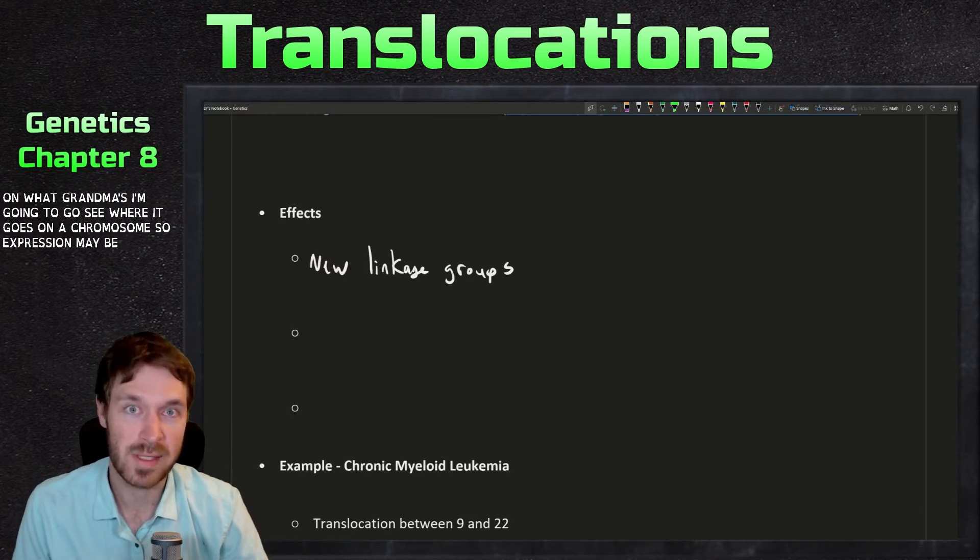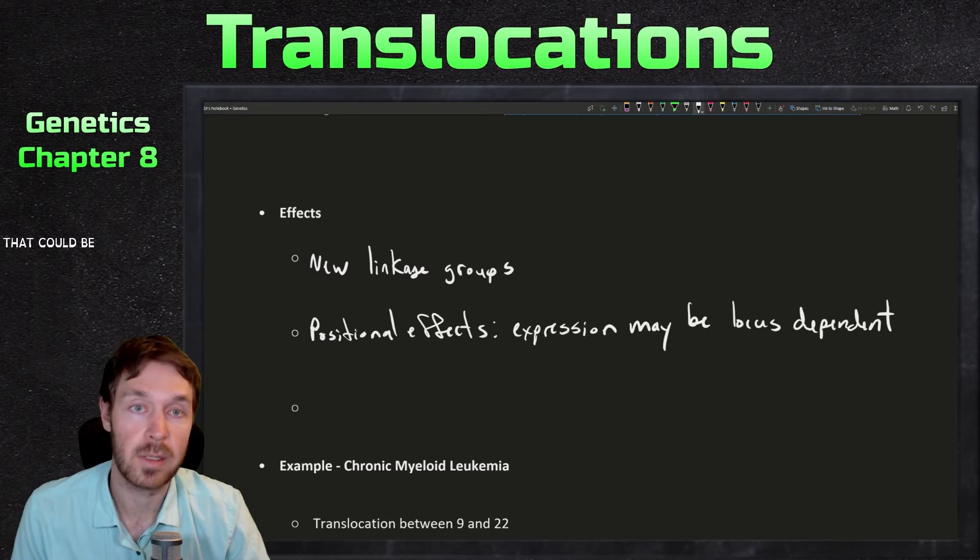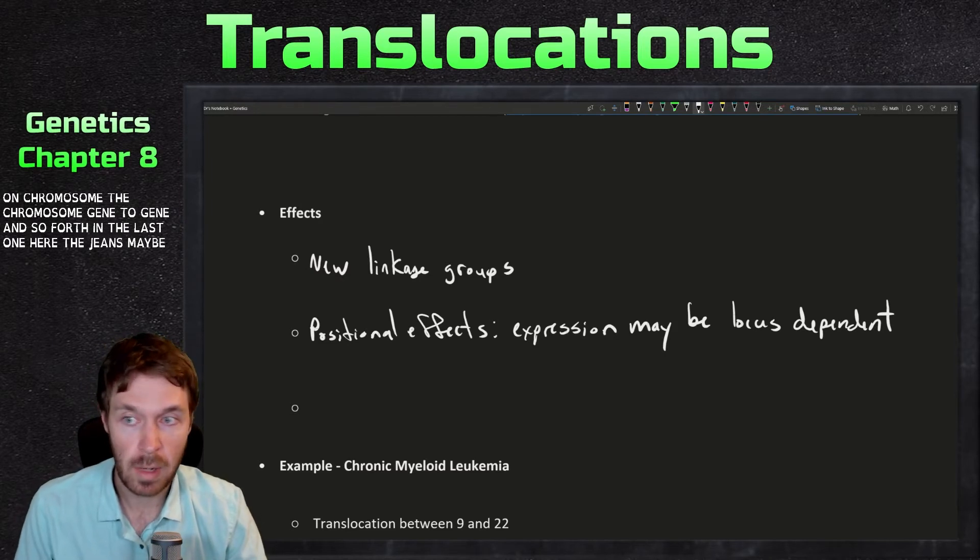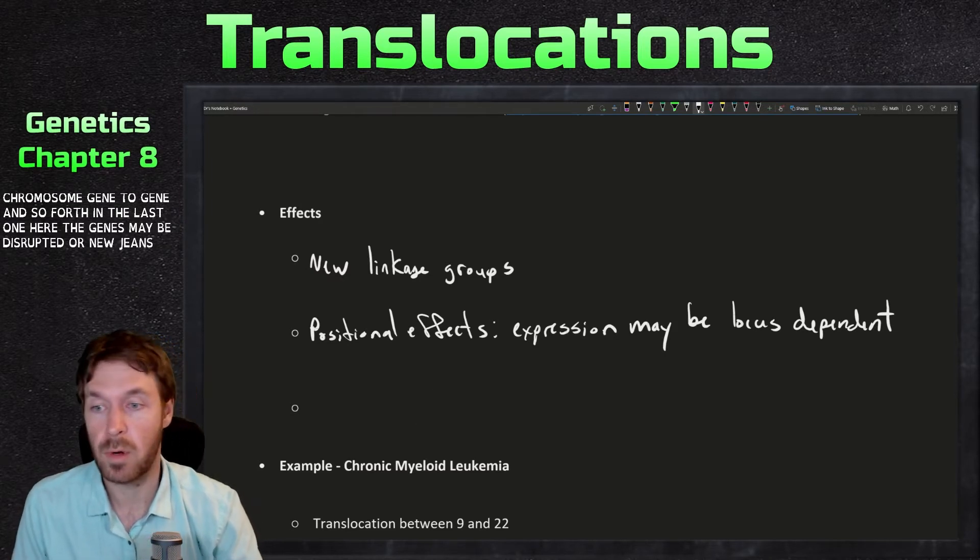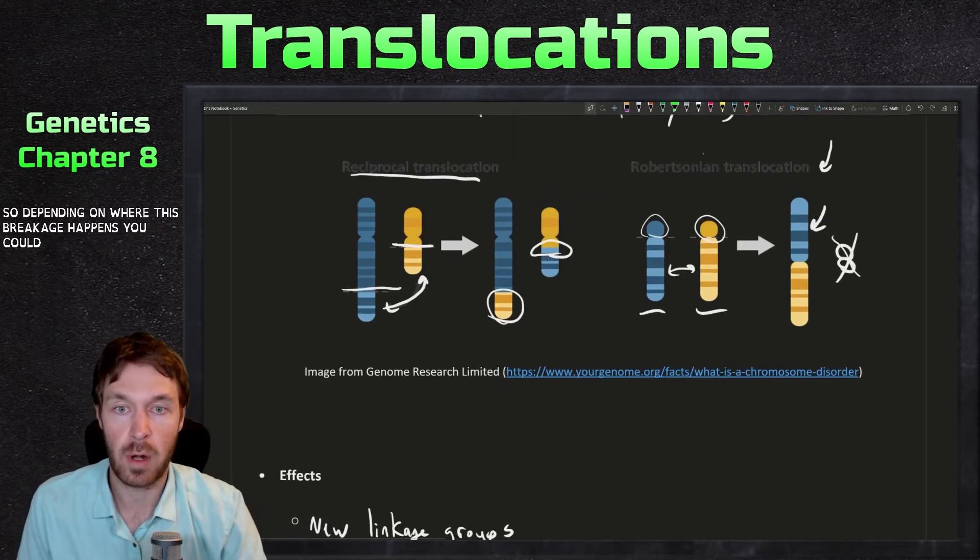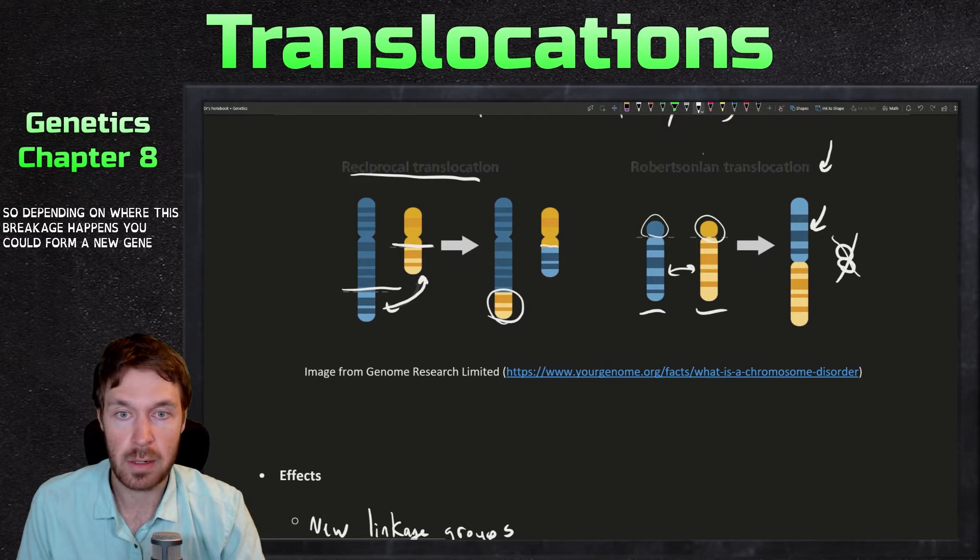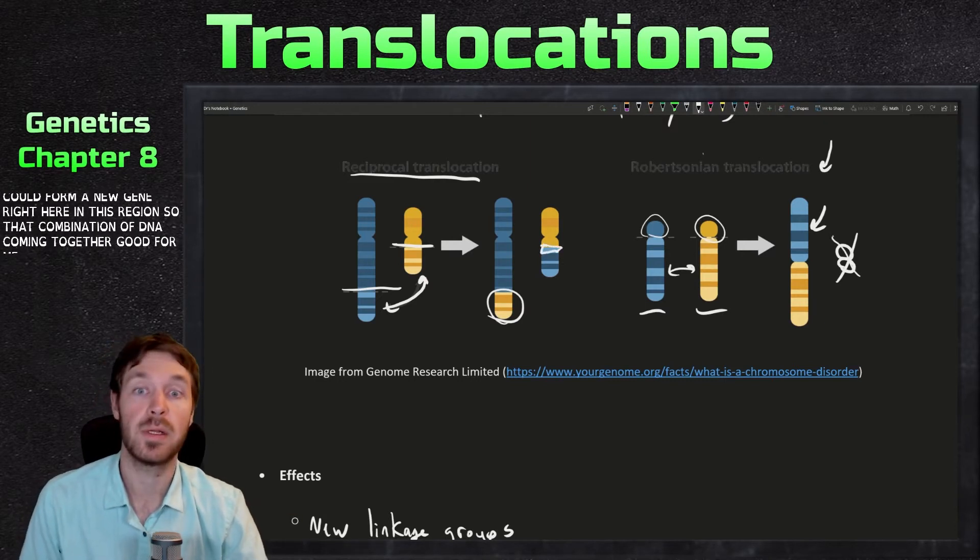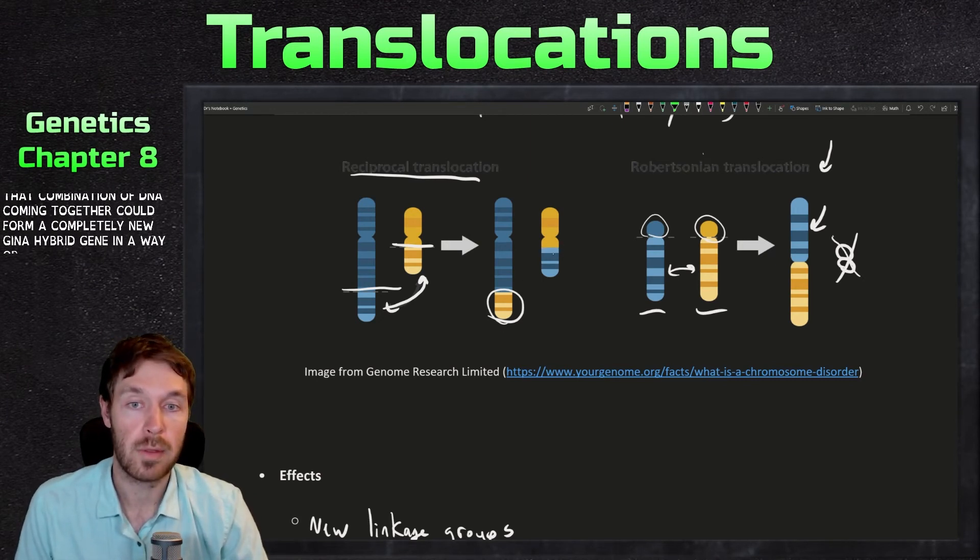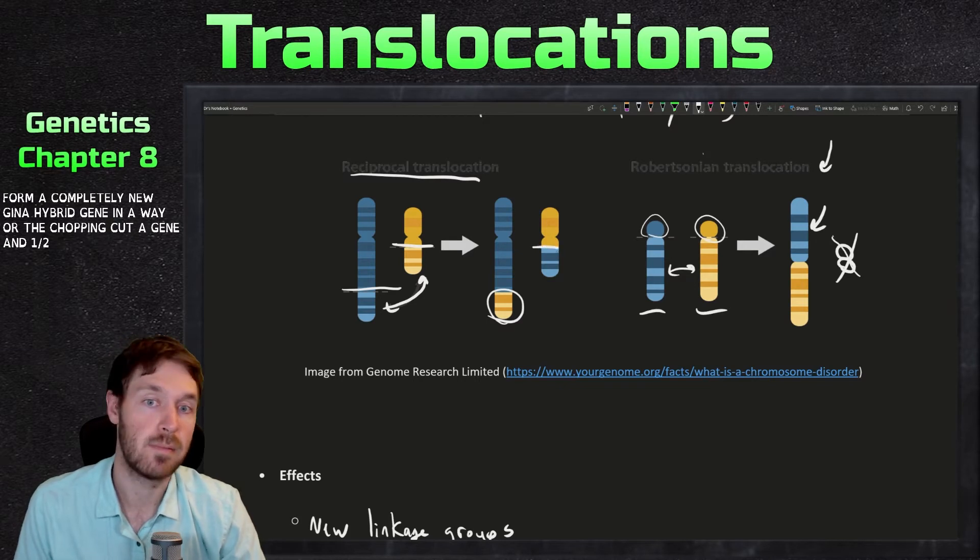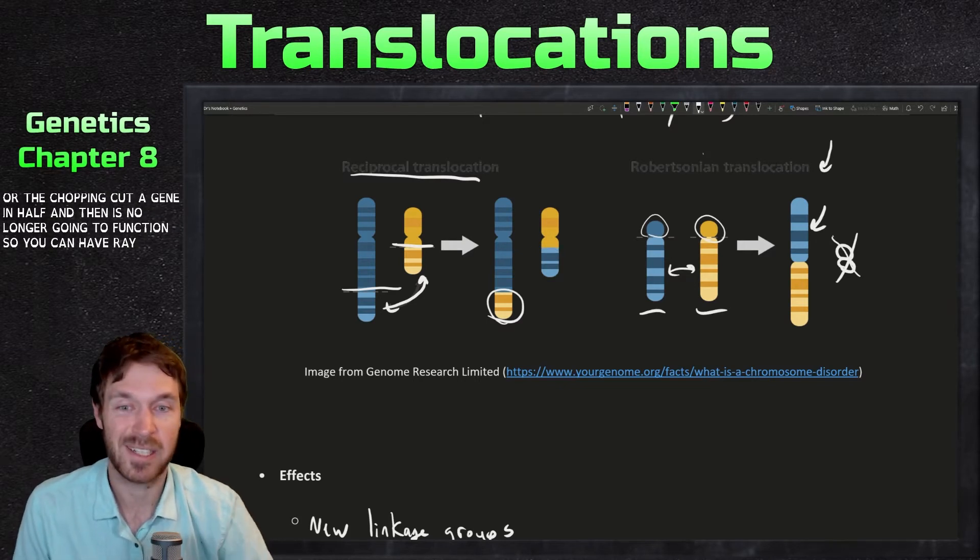So that could vary depending on chromosome to chromosome, gene to gene, and so forth. And the last one here, the genes may be disrupted or new genes could form. So depending on where this breakage happens, you could form a new gene right here in this region. So that combination of DNA coming together could form a completely new gene, a hybrid gene in a way, or the chopping could cut a gene in half and then it's no longer going to function. So you could have random things like that happen.